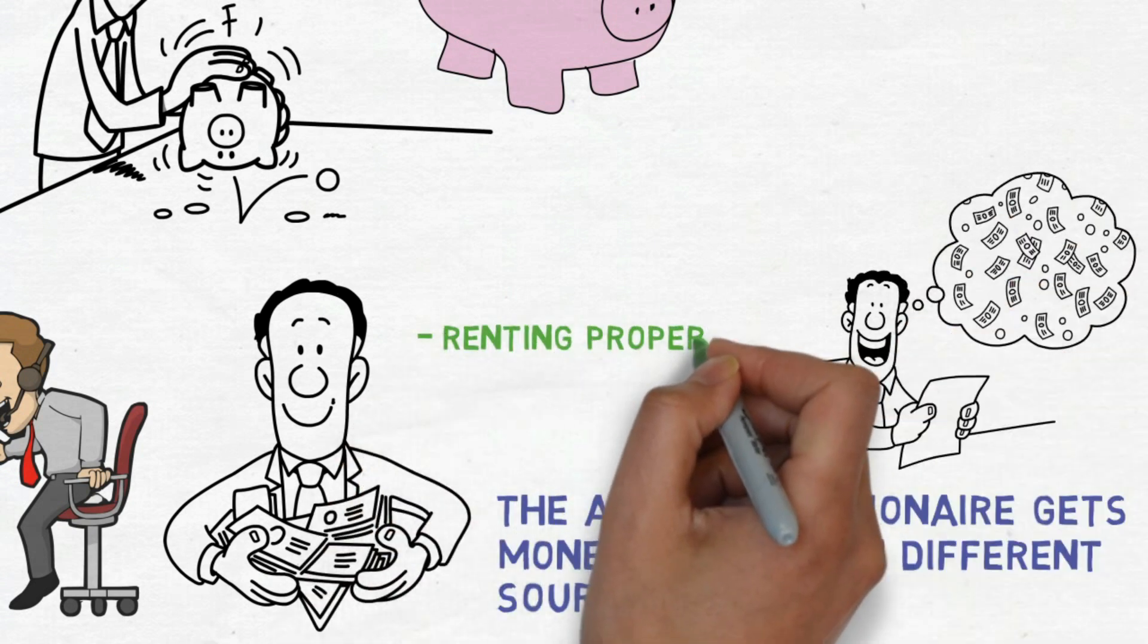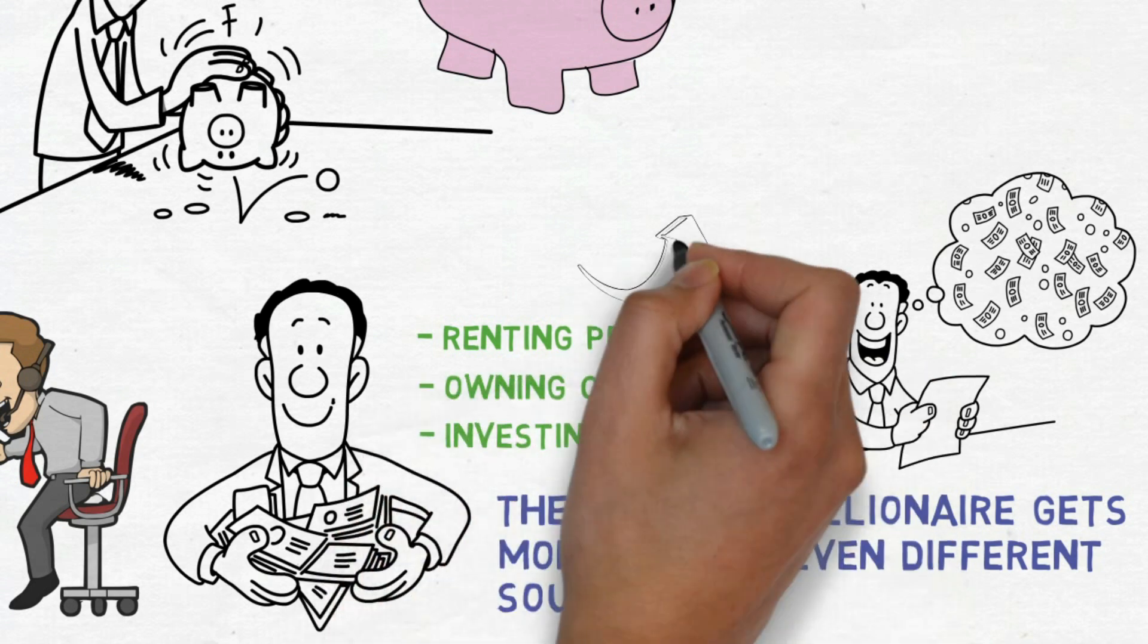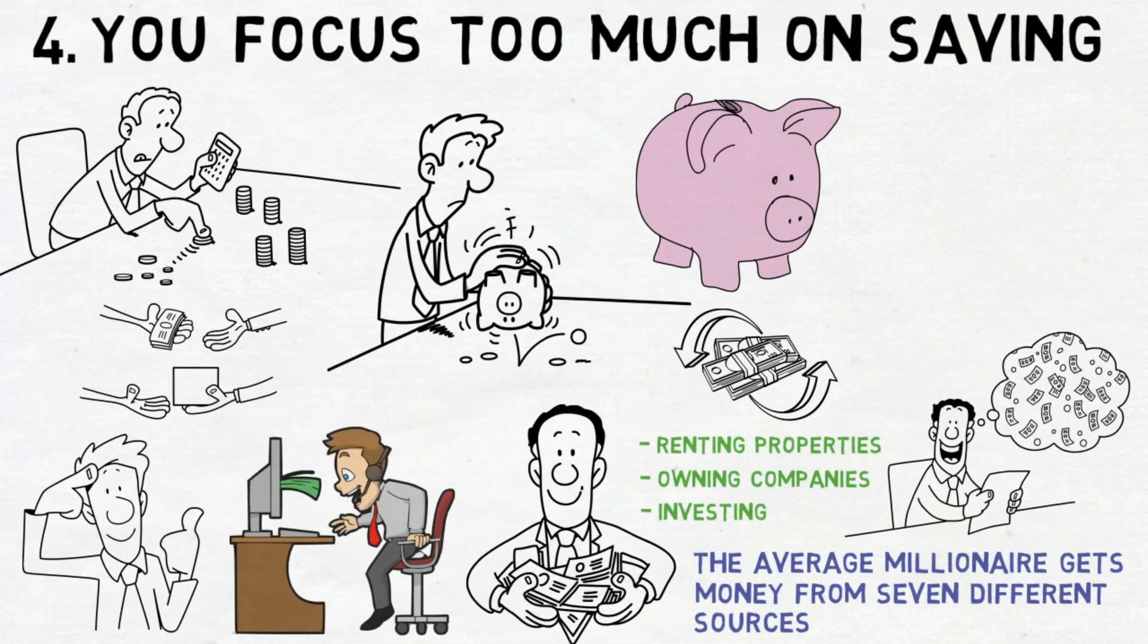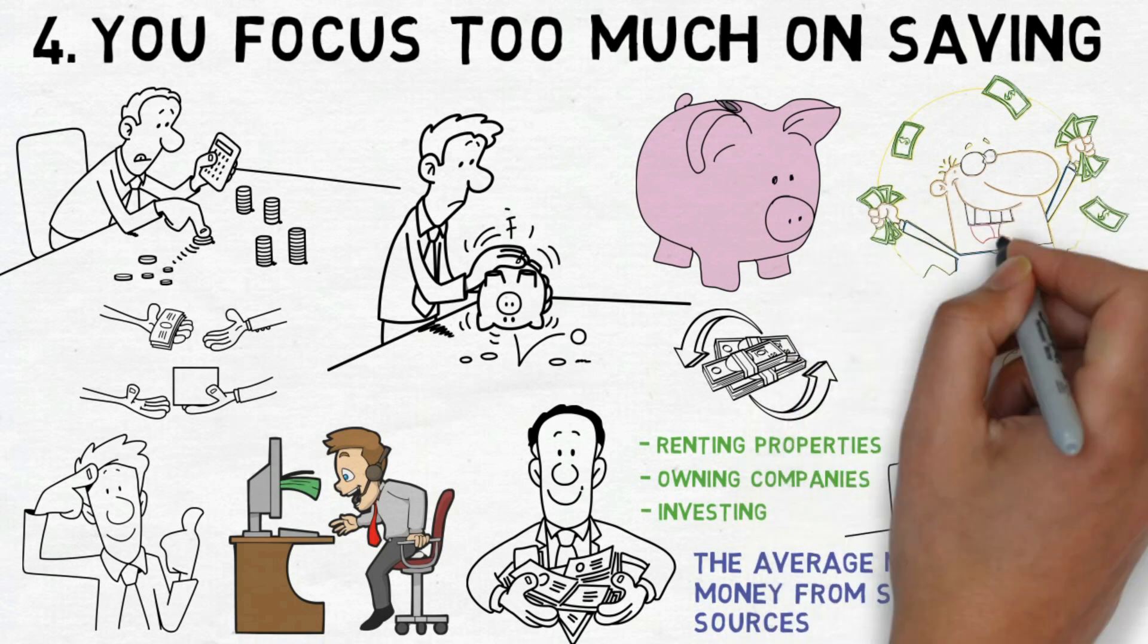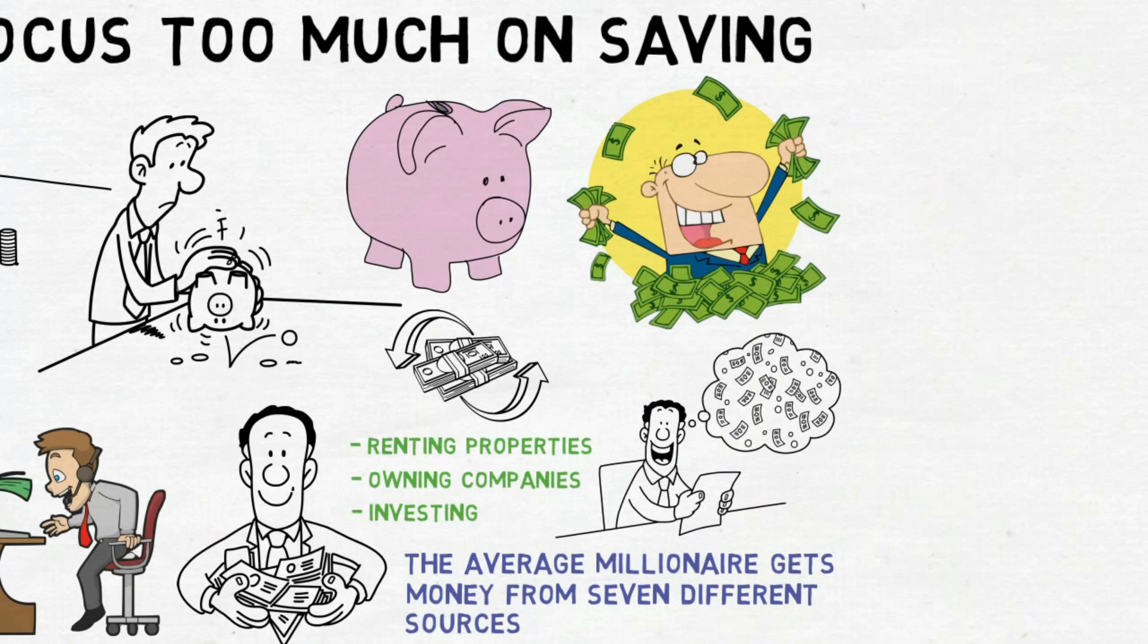These different methods of earning money, such as renting properties, owning companies, and investing, help wealthy individuals generate income from a variety of sources. If you really want to become rich, it's really important to spend time and effort on making money, just like you do for saving.